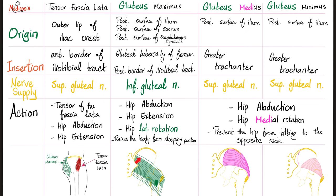Gluteus medius takes from the posterior surface of the ilium to the greater trochanter of the femur. Its functions are hip abduction and hip medial rotation. Gluteus minimus has the same function as the gluteus medius. Both of them prevent the hip from tilting to the opposite side — and this is the essence of the Trendelenburg gait discussed in the previous video.